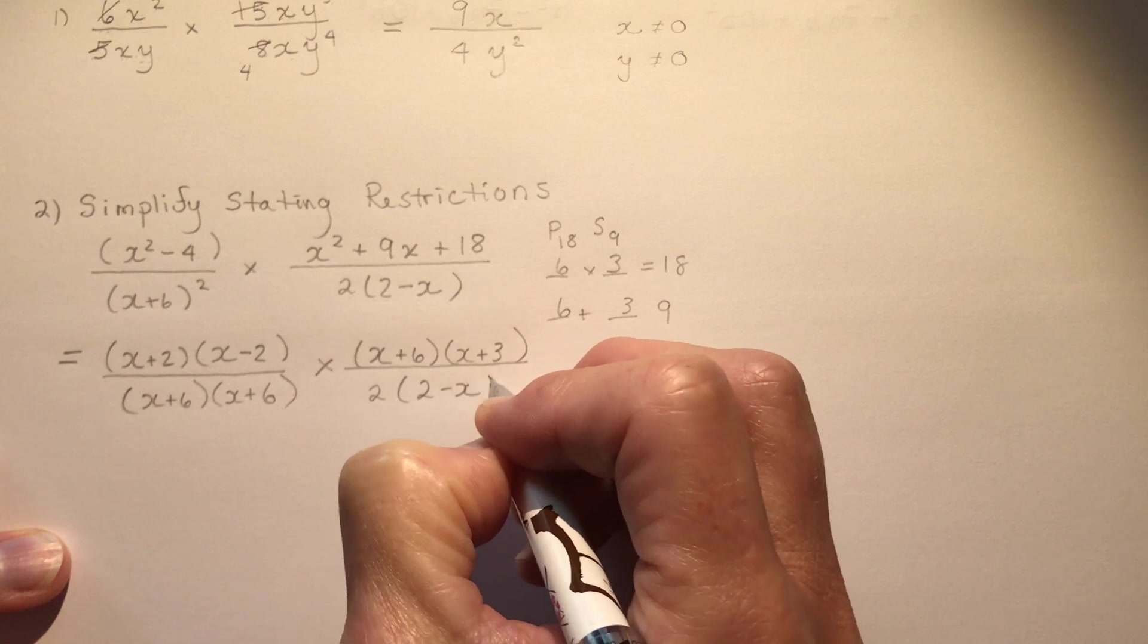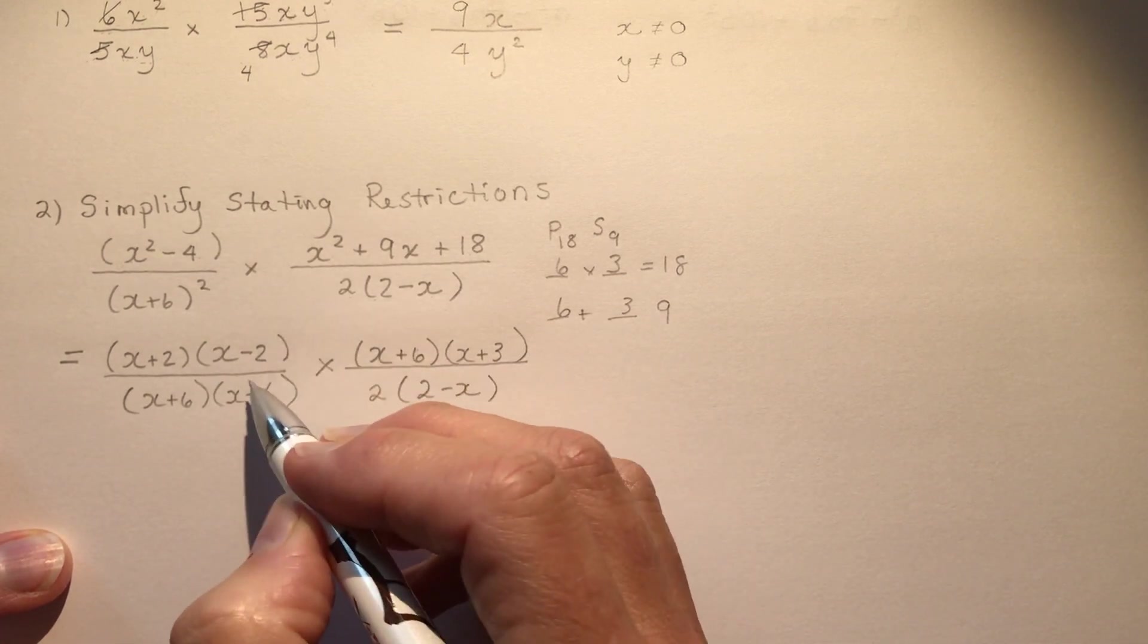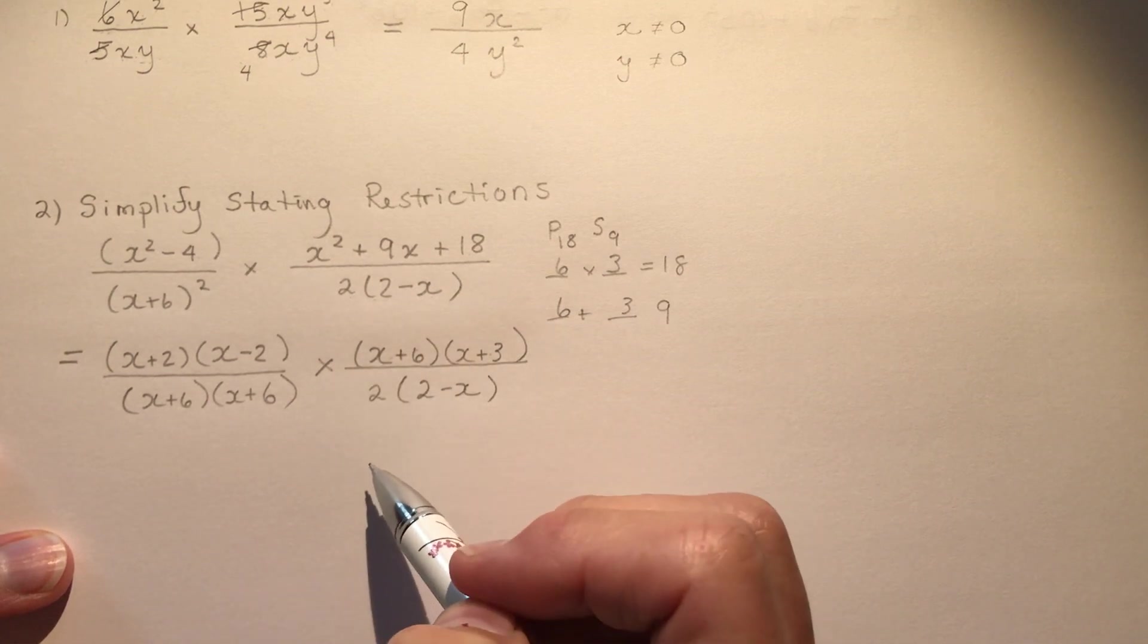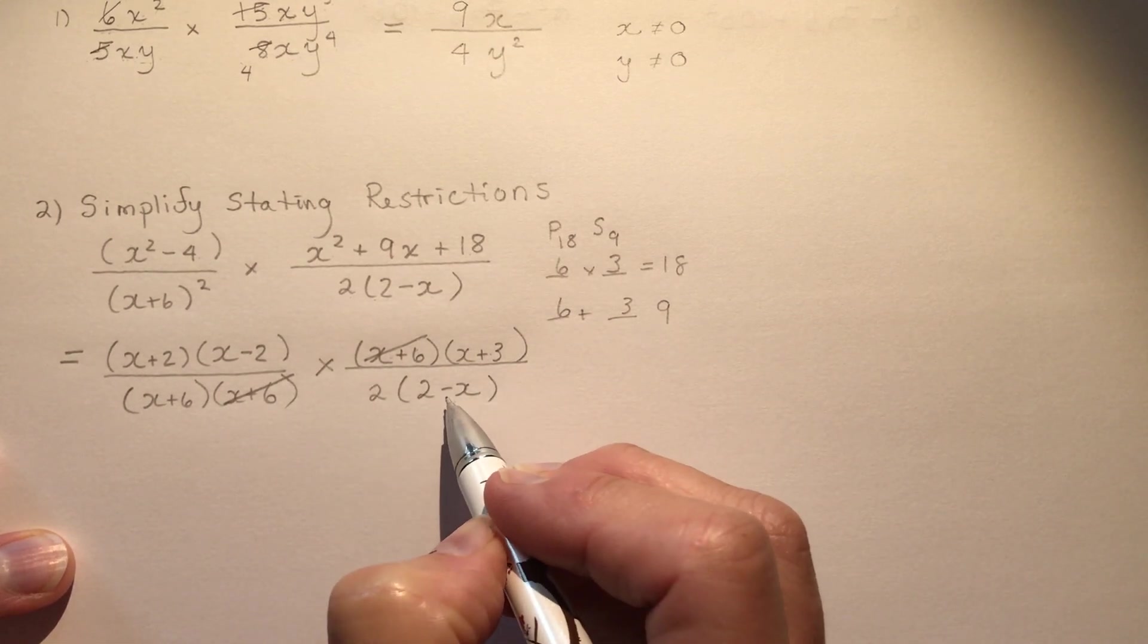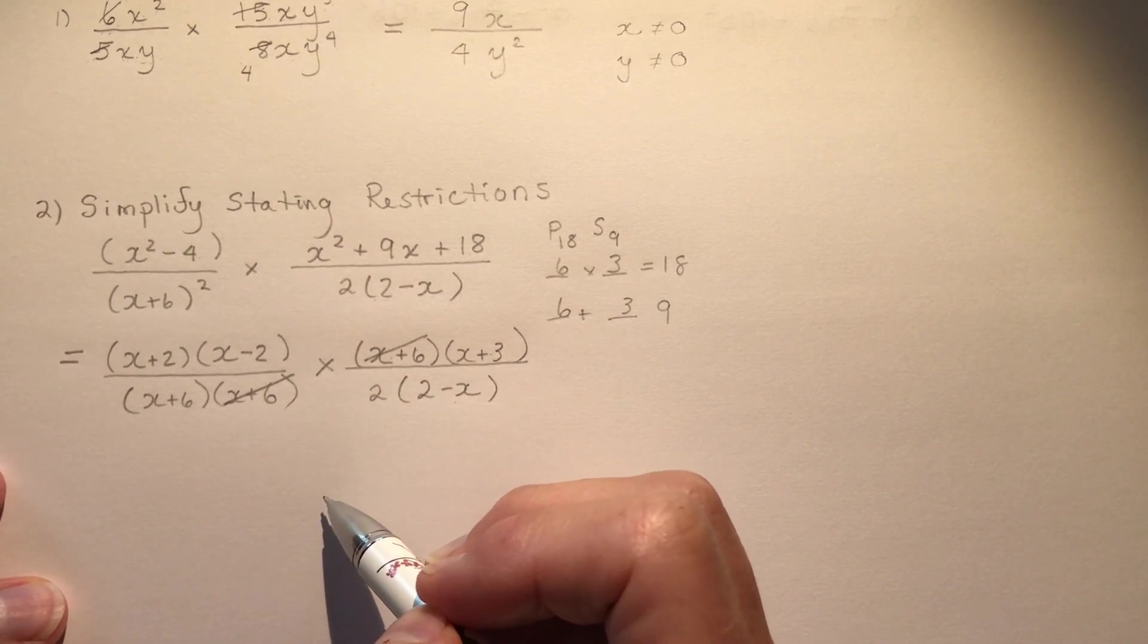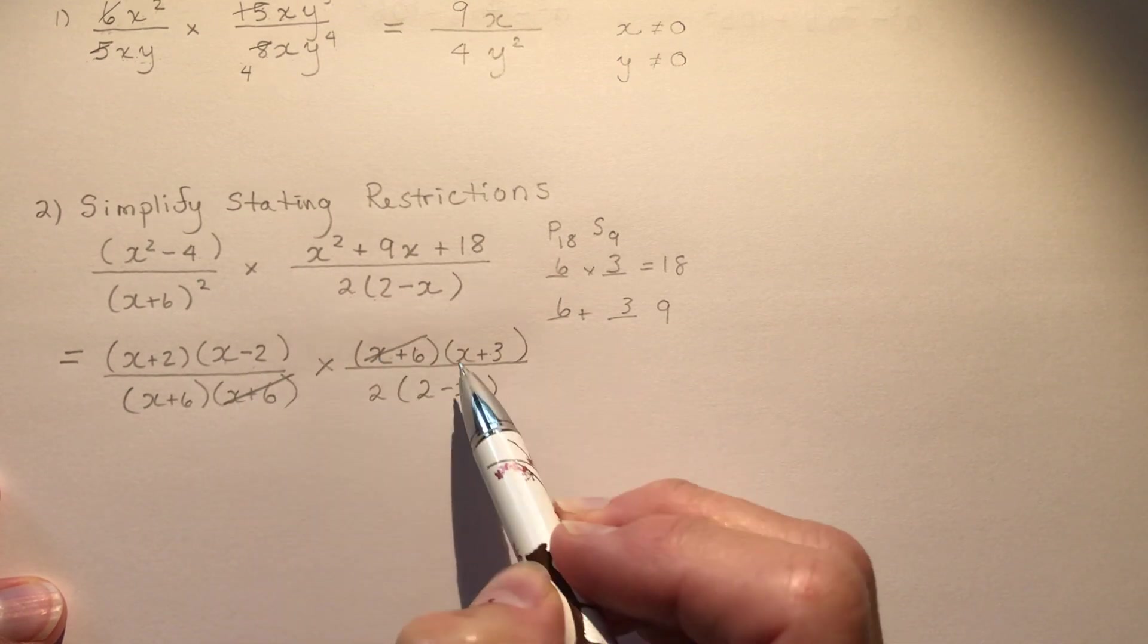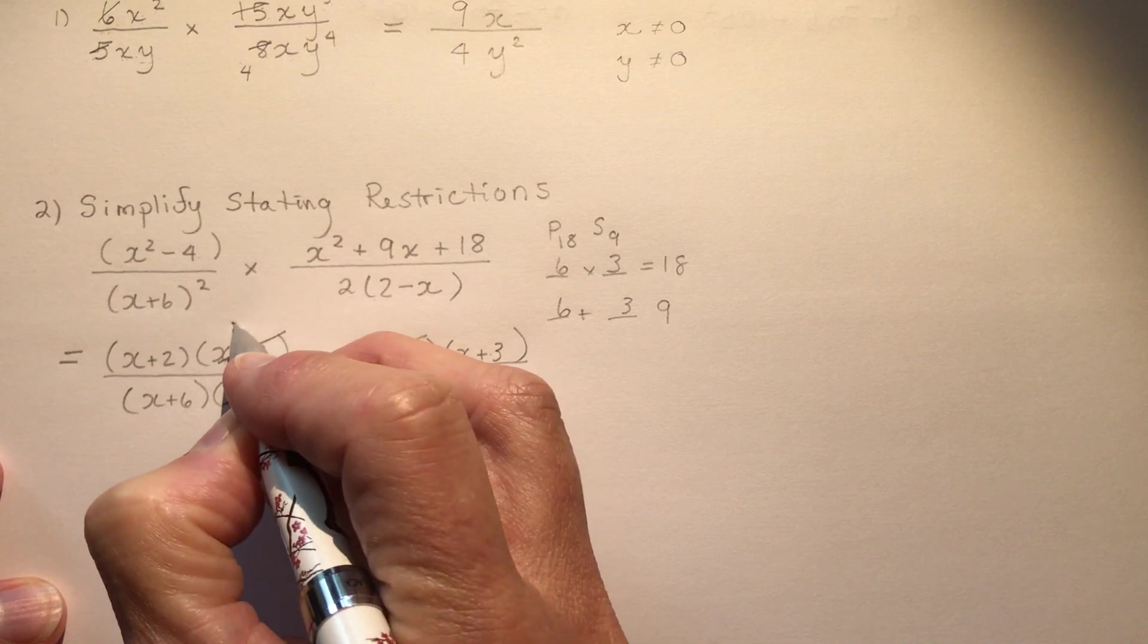So 2 times 2 minus x. Now you can see that you have 1x plus 6 here. Remember when you're doing multiplication, once everything's in factored form, you can't cross out anything until it's times times. Make sure everything's multiplication. I have an x plus 6 here and an x plus 6 here. Now I have to deal with this 2 minus x, which is kind of like an x minus 2. But I would substitute in a value to see if they are just different by a factor of minus 1. If you put in a 3 here, you would have 3 minus 2 is 1, and 2 minus 3 is minus 1. So that means that this would divide into this one minus 1 times.